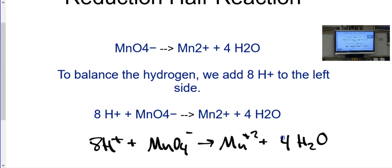MnO4- goes to Mn plus two plus four H2O. Now, every element is balanced, but we do have a major problem now. The charge is definitely out of whack, correct? So if you look, good job, we have eight pluses and one minus, so this side's a plus seven. Are you all right with that?